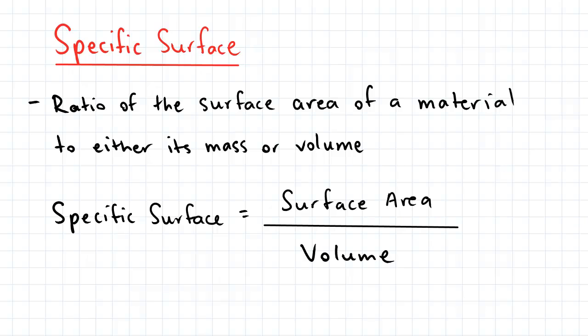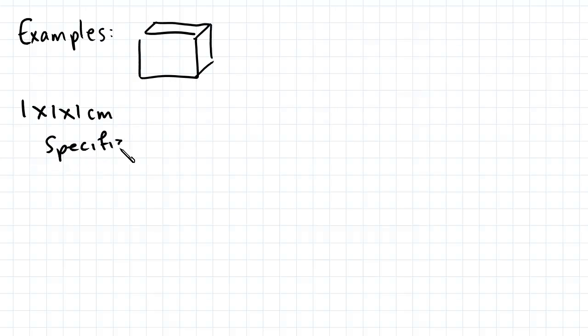Let's do a couple of examples to see how this is evaluated. So let's say we have a cube, and its dimensions are 1 by 1 by 1 centimeter. The specific surface would equal the surface area, so that's 6 multiplied by 6 squares, which is 1 by 1 square centimeters, divided by the volume, which is 1 cubic centimeter. This works out to be 6 units per centimeter.